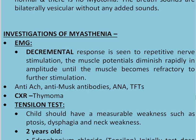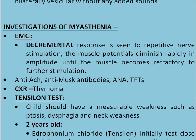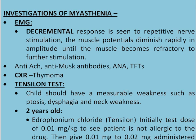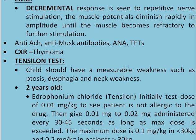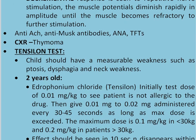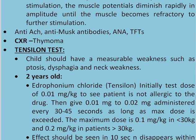Investigations for myasthenia gravis: EMG will show a decremental response to repetitive nerve stimulation — muscle potentials diminish rapidly in amplitude until the muscle becomes refractory to further stimulation. Also check anti-acetylcholinesterase antibodies, anti-muscle-specific kinase (MuSK) antibodies, anti-nuclear antibodies, and thyroid function tests. Chest X-ray for thymoma. Tensilon test.